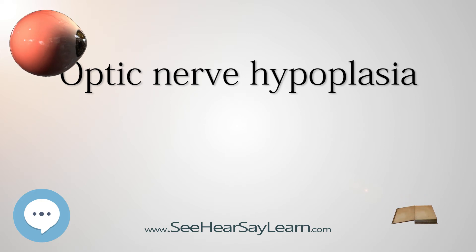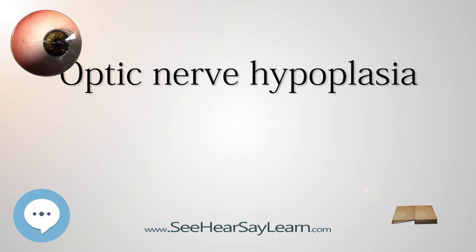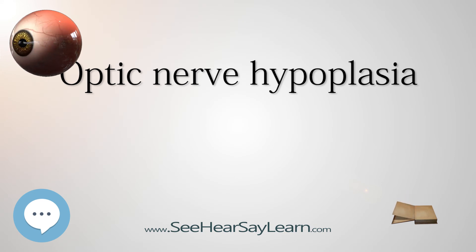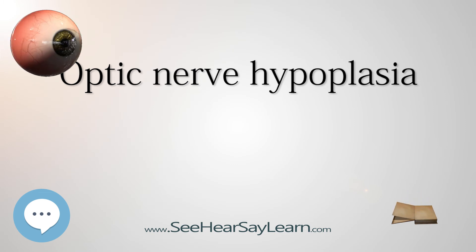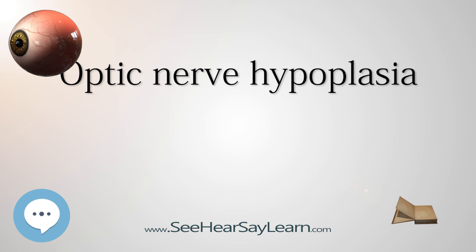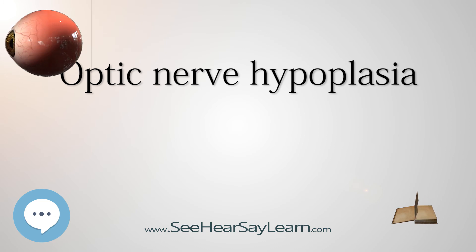Optic nerve hypoplasia is a congenital condition in which the optic nerve is underdeveloped and small. Many times, de Morsier's syndrome or septo-optic dysplasia (SOD) is associated with ONH; however, it is possible to have ONH without SOD. SOD is a condition that can involve multiple problems in the midline structures of the brain stemming from miswiring of the brain and central nervous system. Besides having small optic nerves, persons with ONH can have agenesis of the corpus callosum, absence of the septum pellucidum, maldevelopment of the anterior and posterior pituitary gland, and anomalies of the hypothalamus. All children with ONH are at risk for developmental delays and hormonal deficiencies regardless of severity or whether abnormalities are visible by MRI. ONH is the single leading cause of permanent legal blindness in children in the western world.